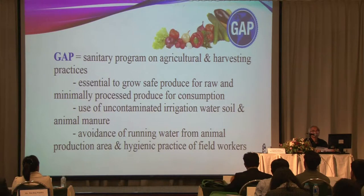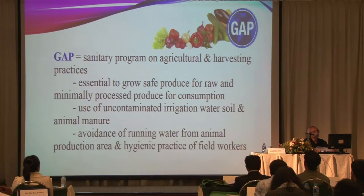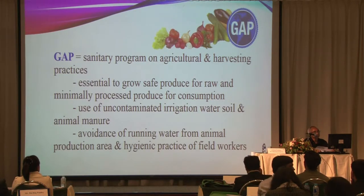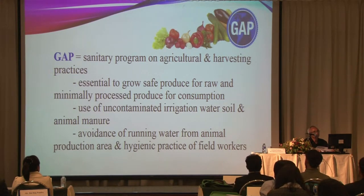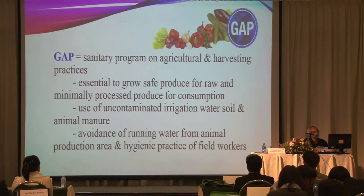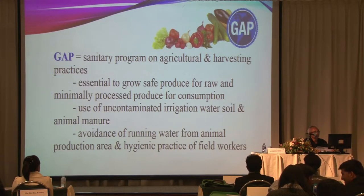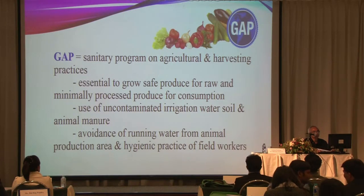GAP is a sanitary program for agricultural and harvesting practices. It is essential to ensure safe produce for raw and minimally processed produce for consumption. It involves use of uncontaminated irrigation water, soil, and animal manure, awareness of runoff water apart from animal production areas, and hygienic practice of field workers.